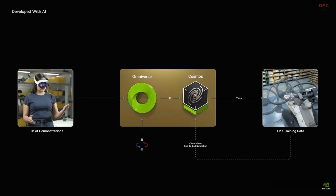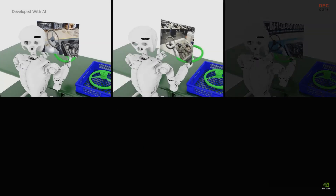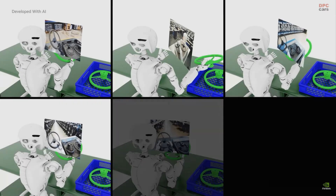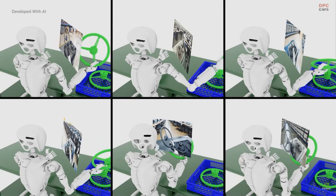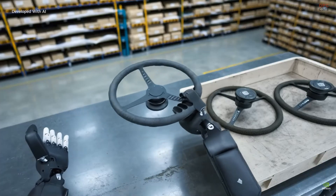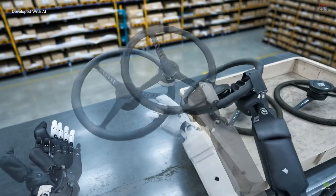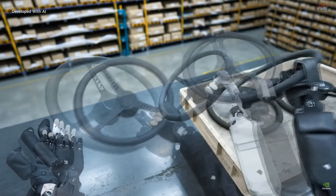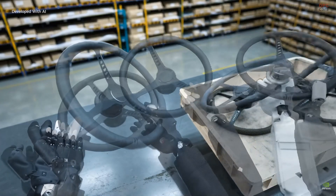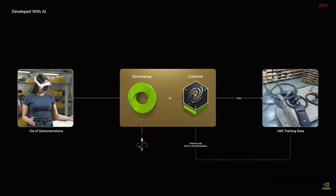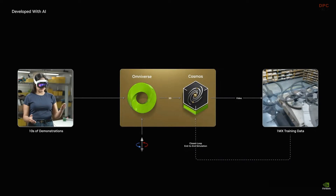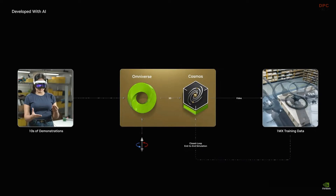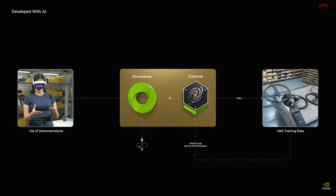The Omniverse and Cosmos Multiverse Simulation Engine provides a massively scaled dataset to train the robot policy. Once the policy is trained, developers can perform software-in-the-loop testing and validation in Isaac Sim before deploying to the real robot.